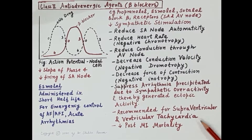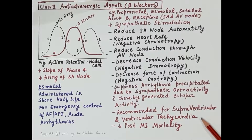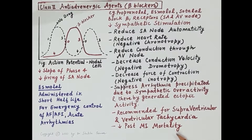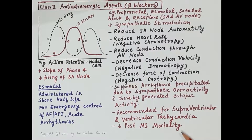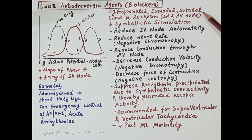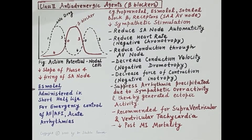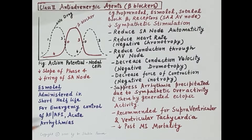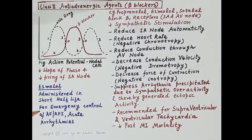Beta blockers are recommended for supraventricular and ventricular tachycardia. Importantly, in clinical trials, these drugs are found to reduce post-myocardial infarction mortality. Esmolol, administered IV with a very short half-life and fast onset of action, is used for emergency control of atrial fibrillation, atrial flutter, and acute arrhythmias.